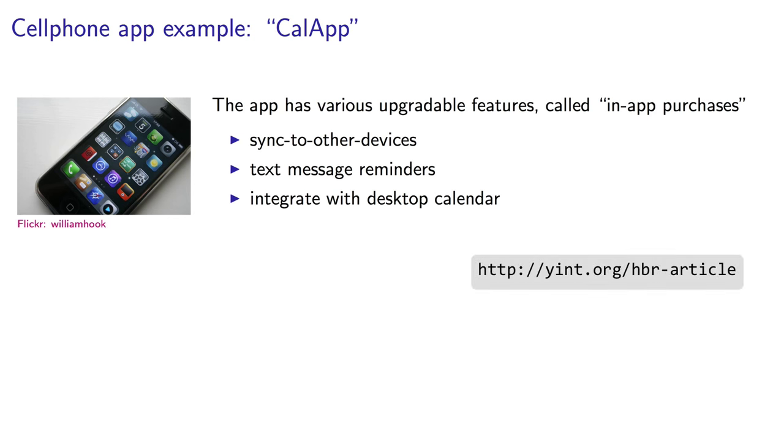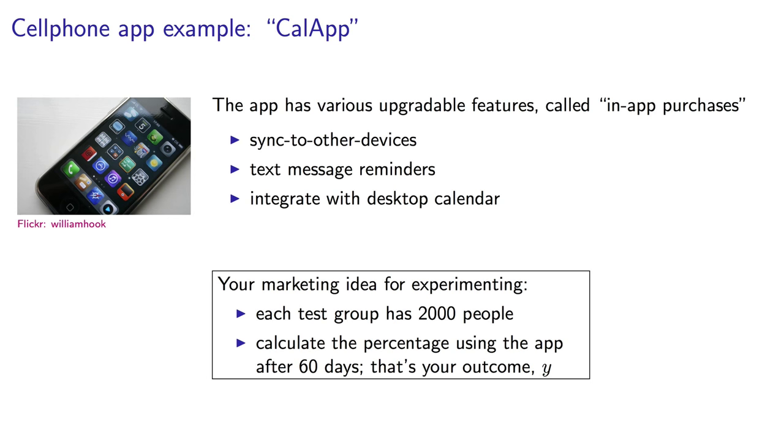The example was inspired by an article that appeared in the Harvard Business Review. You are marketing a calendaring app for a cell phone. Let's call it CalApp. The basic functionality in the app is free, but inside the app, the users can pay small amounts to upgrade various features. These are known as in-app purchases. For example, you could pay $1 and get the sync to other devices feature. Or pay another dollar extra for SMS reminders. Or you might really need that extra feature for integration with your desktop calendaring application, and you guessed it, that's going to cost you another dollar. So your company has created the app, but it's your job to sell and promote it. Each experiment you do might involve about 2,000 people. And you will measure the percentage of those people that are still using the app after 60 days. That's your outcome variable.